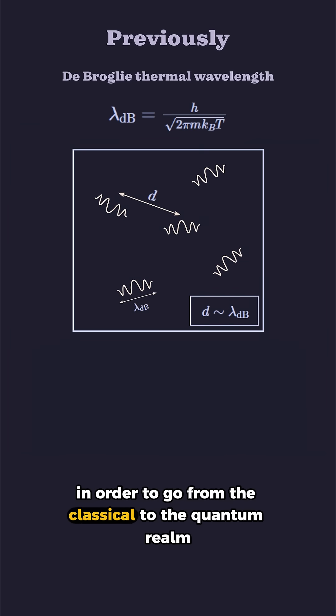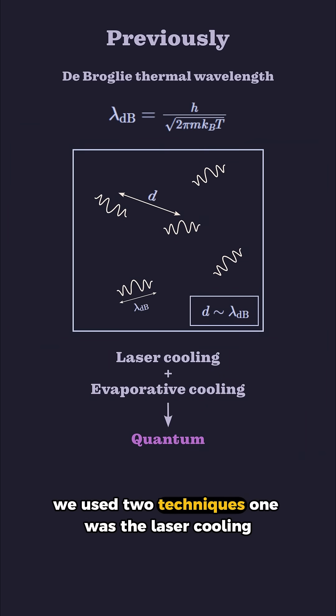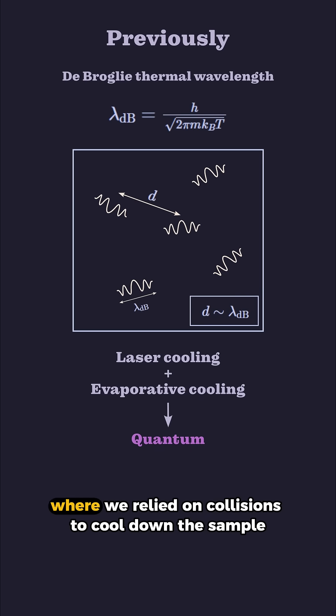In order to go from the classical to the quantum realm, we used two techniques. One was laser cooling, where we used light to slow down the atoms, and then evaporative cooling, where we relied on collisions to cool down the sample.